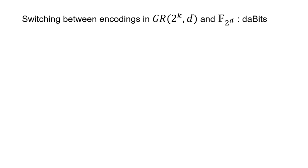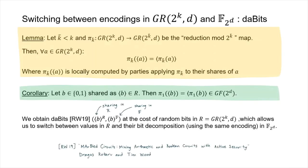We also give a way of switching between an encoded value in R and an encoded value in GF(2^d), using doubly authenticated bits (dot bits). At a high level, if you have shares of random bits in the ring, parties can perform local operations to get shares of the same bit in GF(2^d). Having shares of these bits in both representations allows parties to switch between a particular encoding in R and the same encoding in GF(2^d), and we give protocols for generating these random bits in the paper.